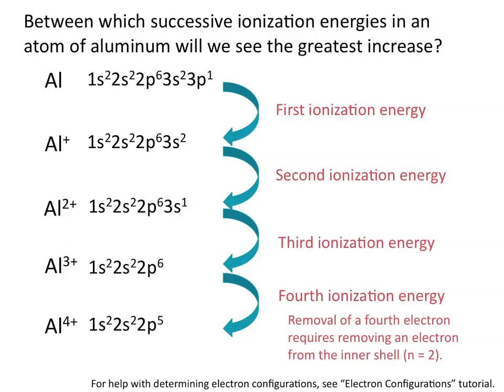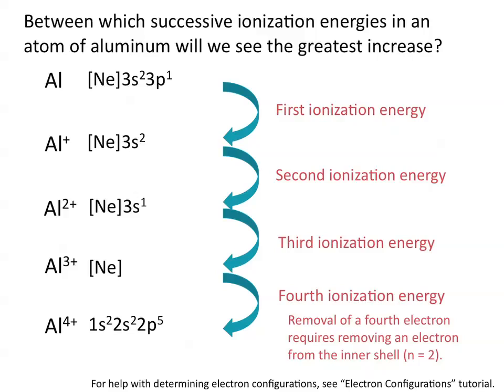You might also remember that atoms tend to form ions with the same charge as their group number. Aluminum is in group 3 on the periodic table, and aluminum likes to form ions with a plus 3 charge, which gives it a stable noble gas configuration. You'll always see a sharp increase in ionization energies between the ion that an atom is most likely to form and the removal of one more electron. So in the case of aluminum, you'll see a sharp increase between the third and fourth ionization energies.